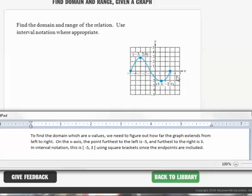To find the domain, which are the x values, we need to figure out how far the graph extends from left to right. On the x-axis, the point furthest to the left is negative 5, and furthest to the right is 3.